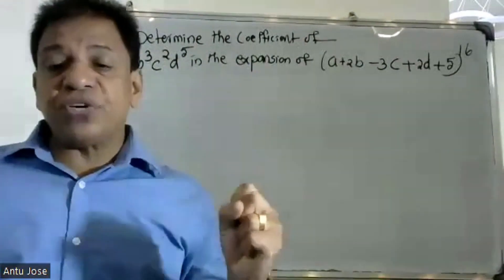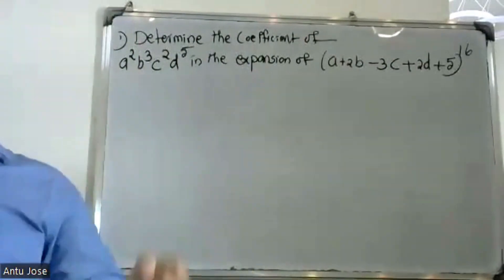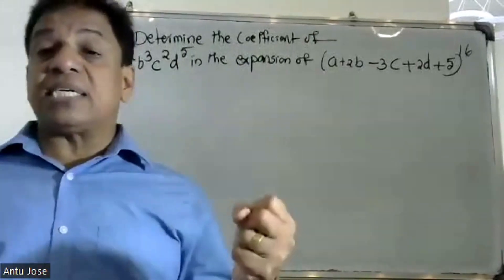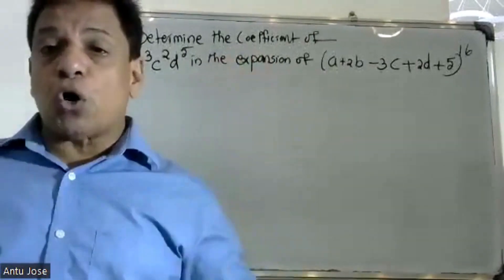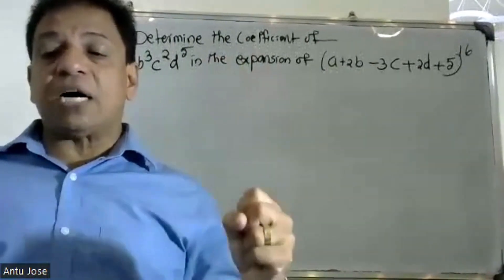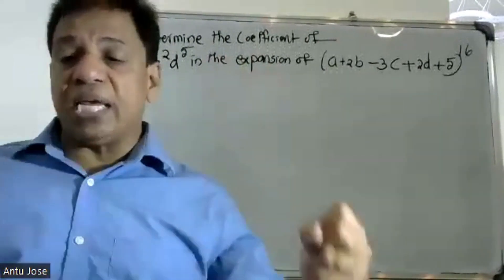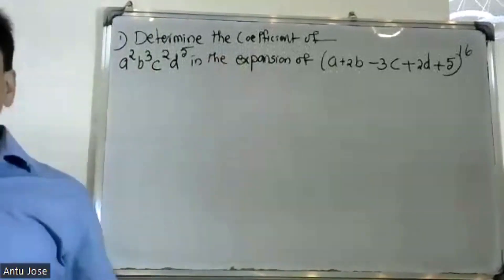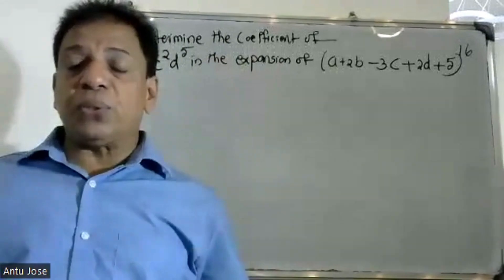The coefficient of x1 raised to n1 into x2 raised to n2 into x3 raised to n3, and so on up to xt raised to nt, in the expansion of (x1 + x2 + ... + xt) raised to n is given by the multinomial formula: n factorial divided by n1 factorial n2 factorial and so on.